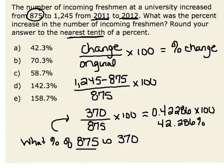So 42.286%. Since we need this rounded to the nearest tenth of a percent, we would round the 2 up to 3, giving us 42.3%, which is our percent increase.